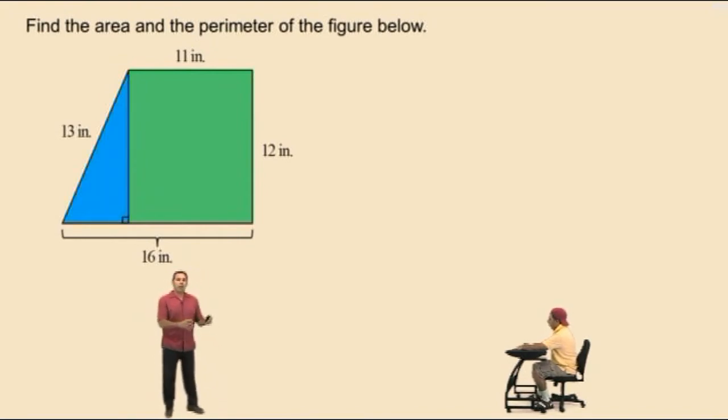Now, what we're going to do here is find the area of the rectangle and then find the area of the right triangle and add those two areas together to get the total area of our figure. Okay, Charlie.